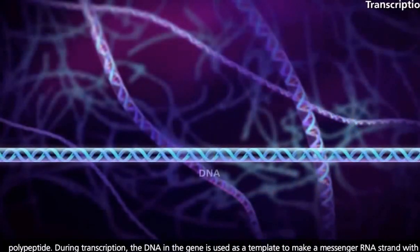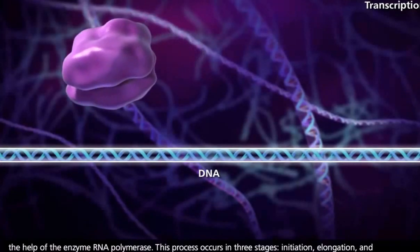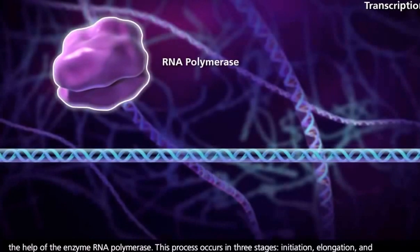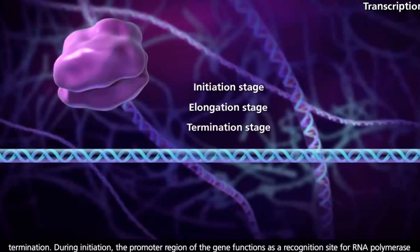During transcription, the DNA in the gene is used as a template to make a messenger RNA strand with the help of the enzyme RNA polymerase. This process occurs in three stages: initiation, elongation, and termination.